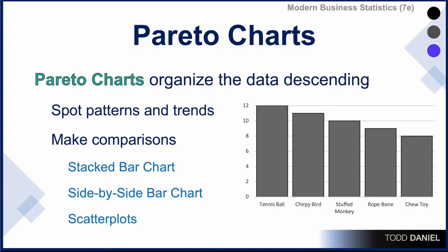We can rearrange the order of these bars, placing them in descending order, making it much easier to see which categories have the greatest frequencies. The bars are centered over scores on the x-axis and counts or percentages could be represented on the y-axis.